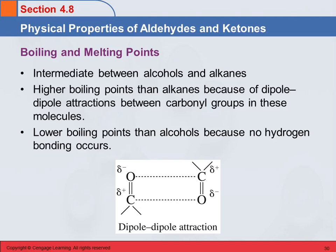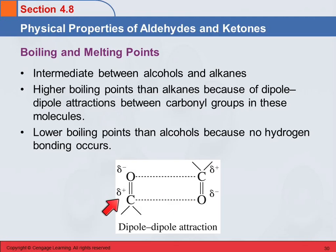The boiling and melting points for aldehydes and ketones are going to be between those of alcohols and alkanes. They're going to be higher than alkanes because they have dipole-dipole attractions between the carbonyl groups. Here's a carbonyl group on one aldehyde or ketone and one on the other — there's no hydrogen bonding going on because there's no hydrogen on this oxygen. The alcohols have hydrogen bonding, and that's why their boiling points are higher.